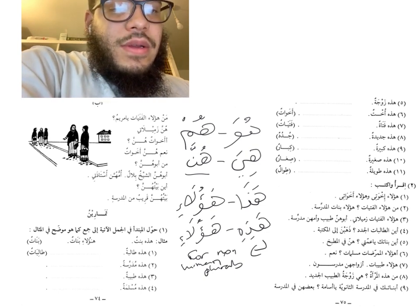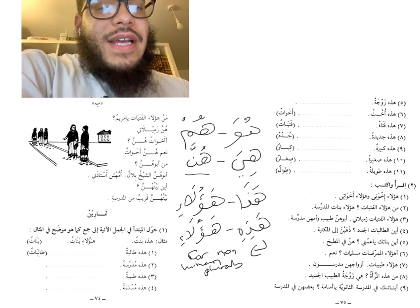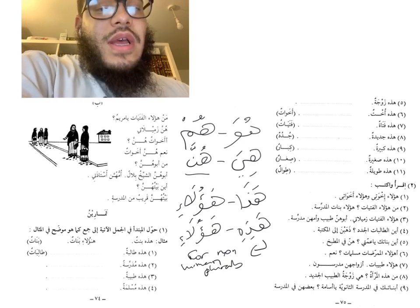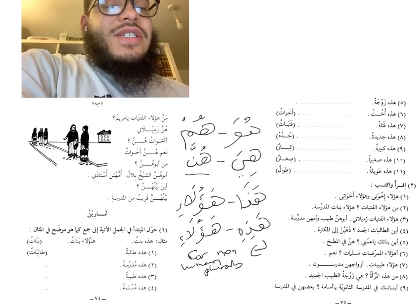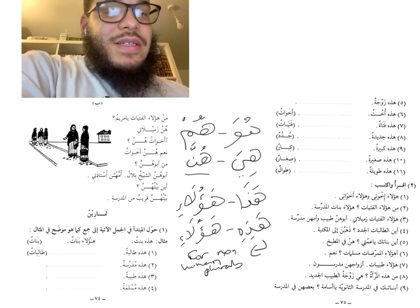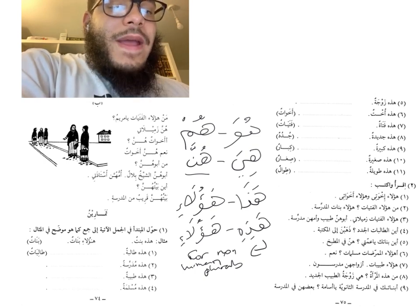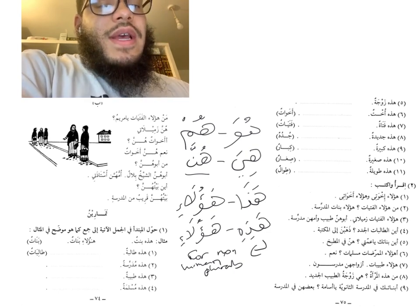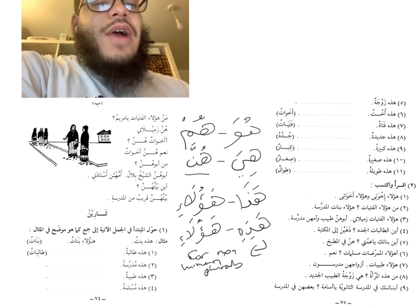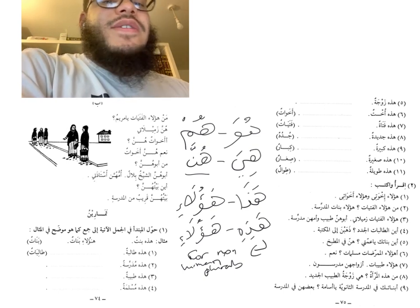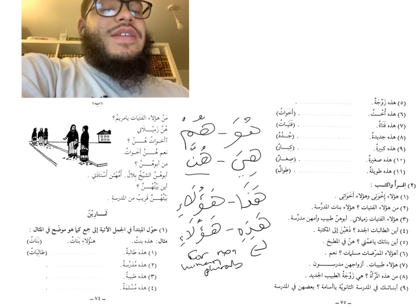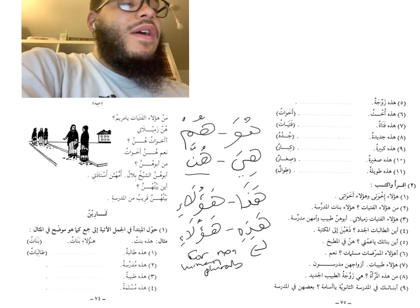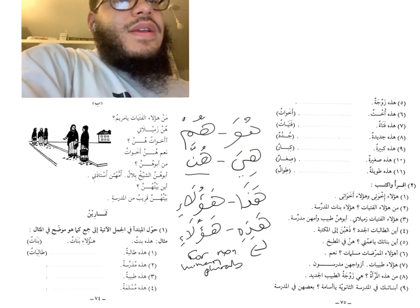The first exercise says: حوّل المبتدأ في الجمل الآتية إلى جمع كما هو موضح في المثال — 'Change the subject in these sentences to a plural as has been shown in the example.' The example is: هذه بنت — 'This is a girl' — becomes هؤلاء بنات — 'These are girls.' You'll do the same for the next 11 sentences.